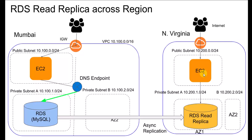Read replicas are typically used to distribute read traffic to different databases so that the performance of your main database is not impacted by read queries. Another use case is that an application hosted in a different geography might want to access the database locally for better performance, where stale data may not be an issue because it eventually catches up with the master DB.